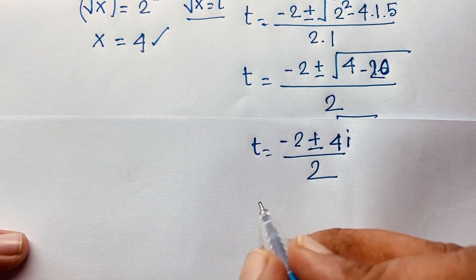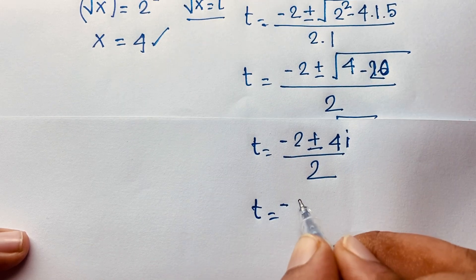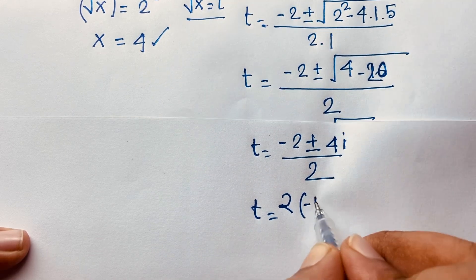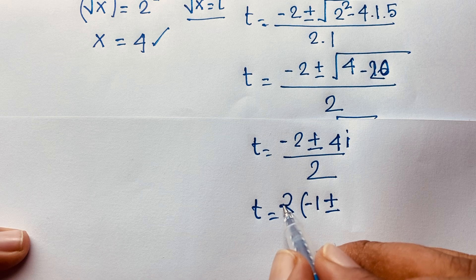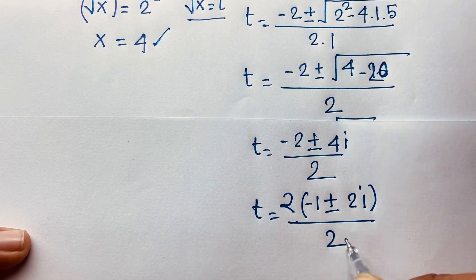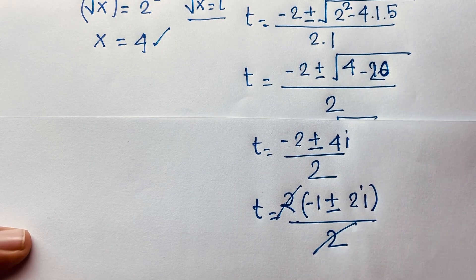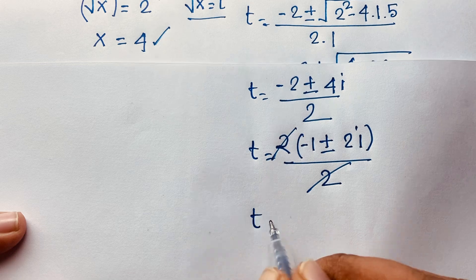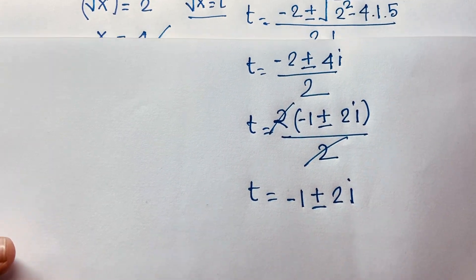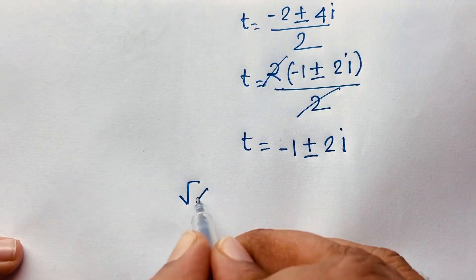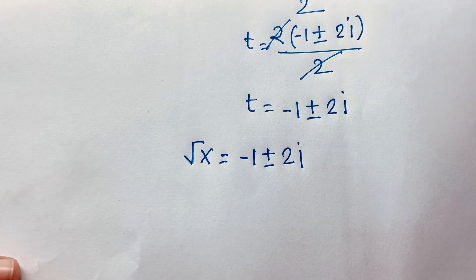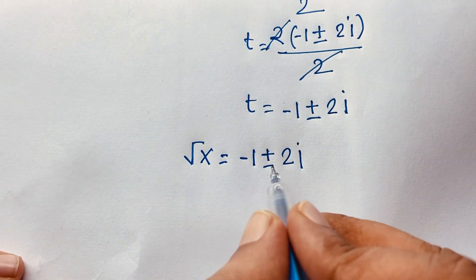Now square root of negative 16 equals 4i, since square root of 16 is 4 and square root of negative 1 is i. So t equals negative 2 plus or minus 4i, over 2. Factoring out 2 gives t equals negative 1 plus or minus 2i. Since t equals square root x, we have square root x equals negative 1 plus or minus 2i — a complex solution.